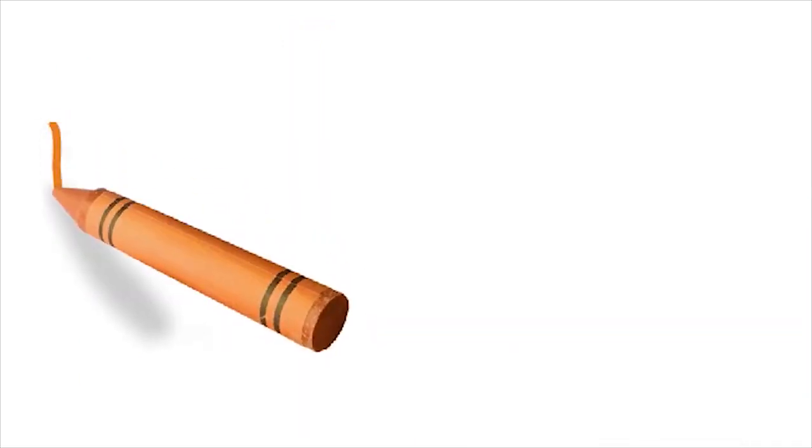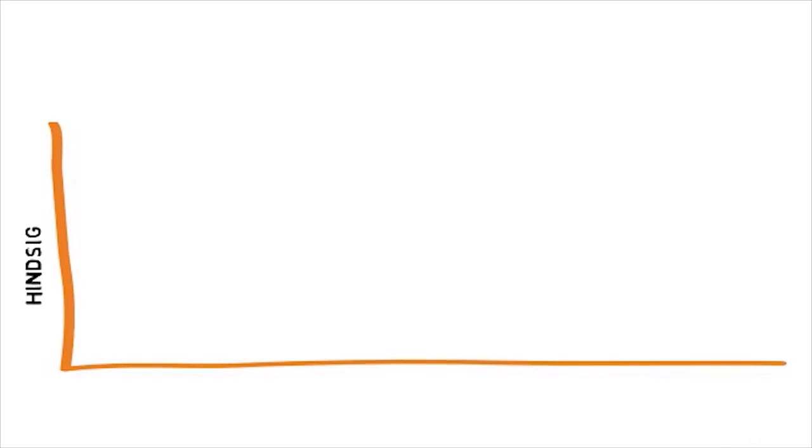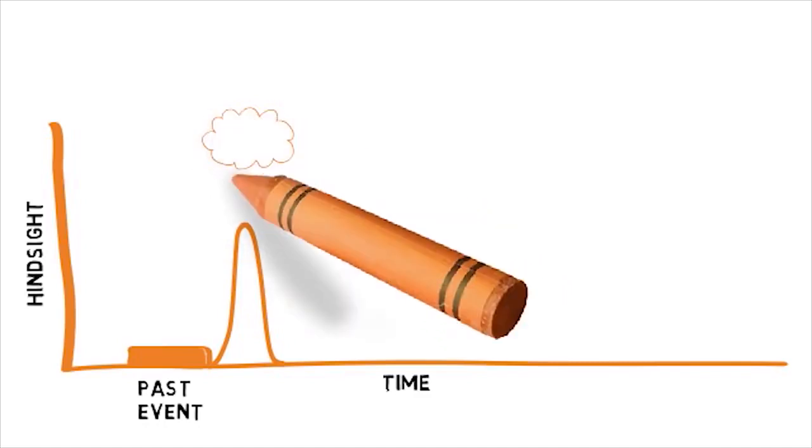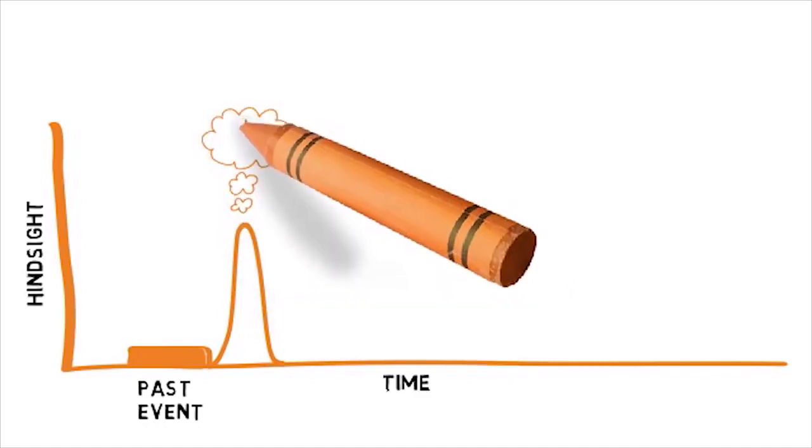One important part of reflection is hindsight. This is the ability to look back at an event with knowledge that wasn't available during the event. Typically, some hindsight will hit immediately following an event as a result of knowledge gained in the process of that event. This is the if only moment when you first look back.